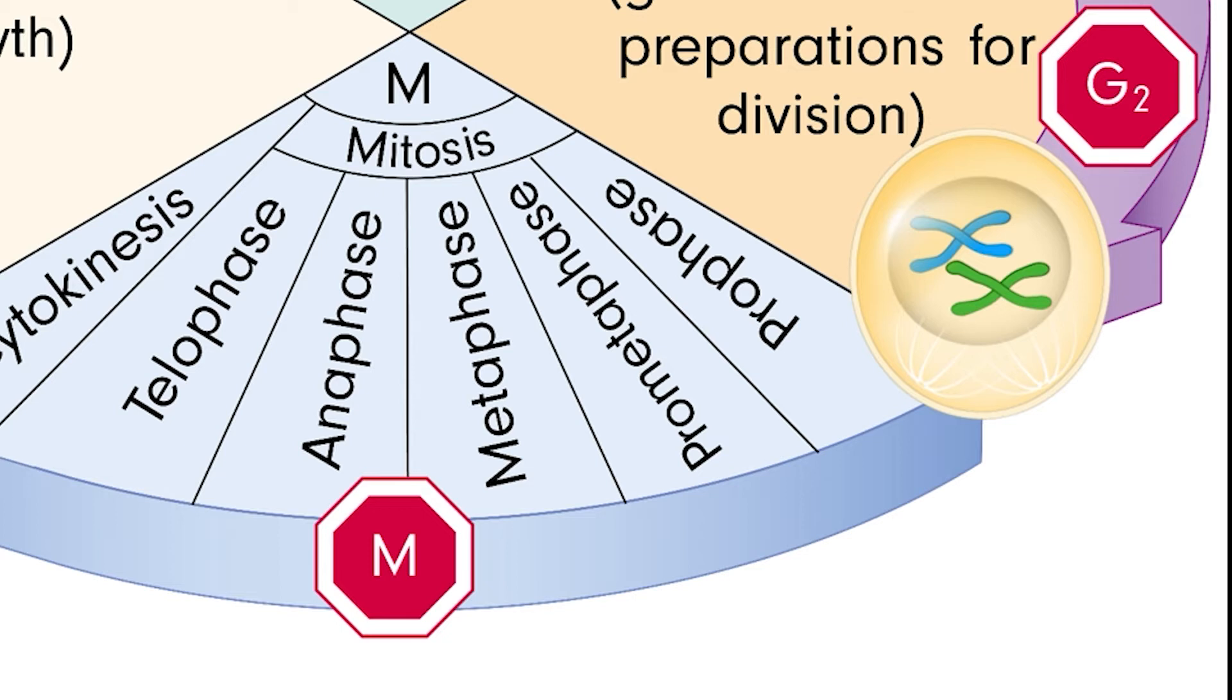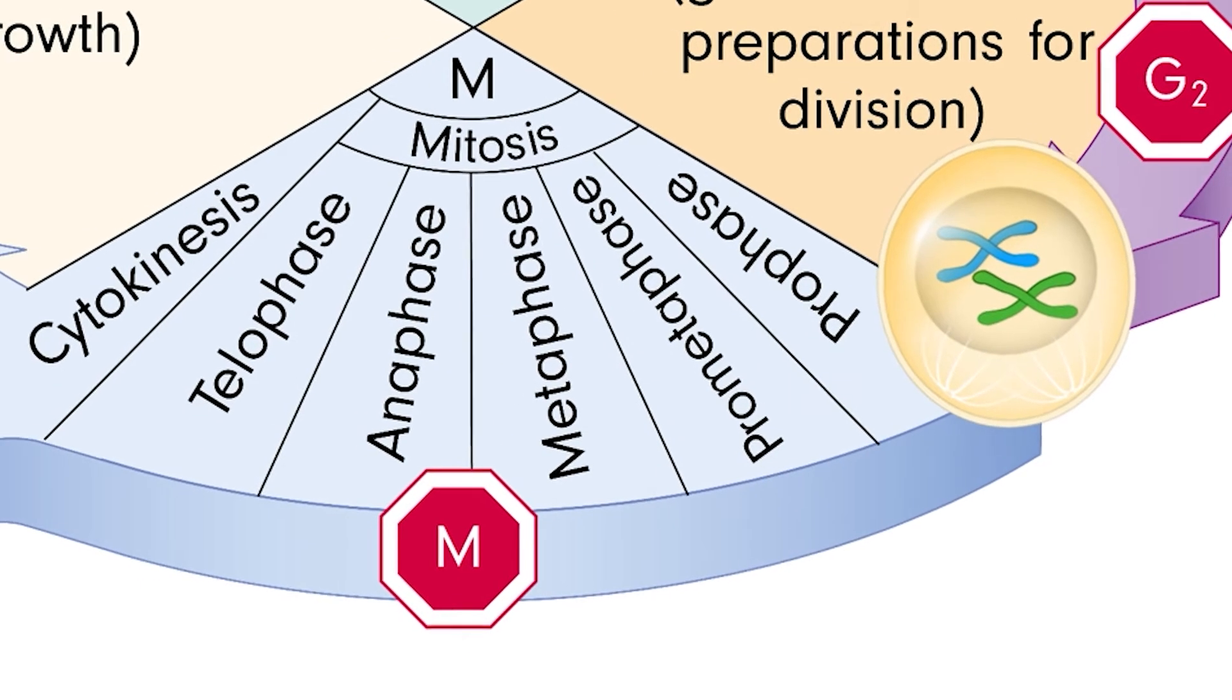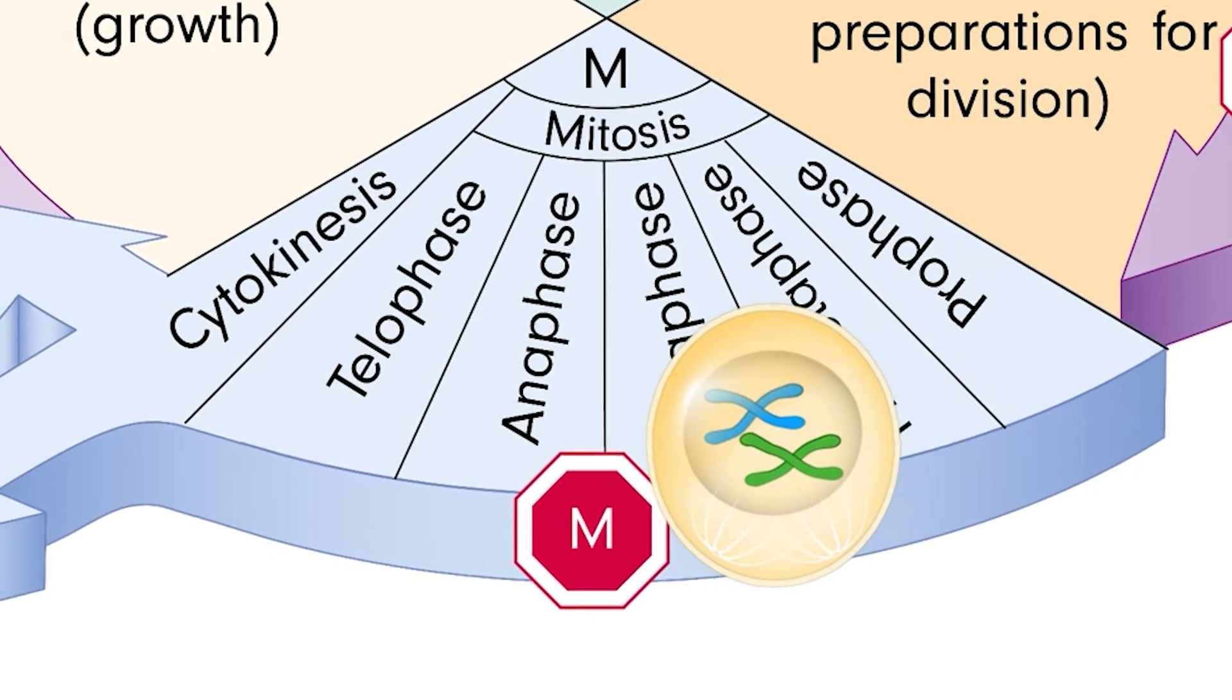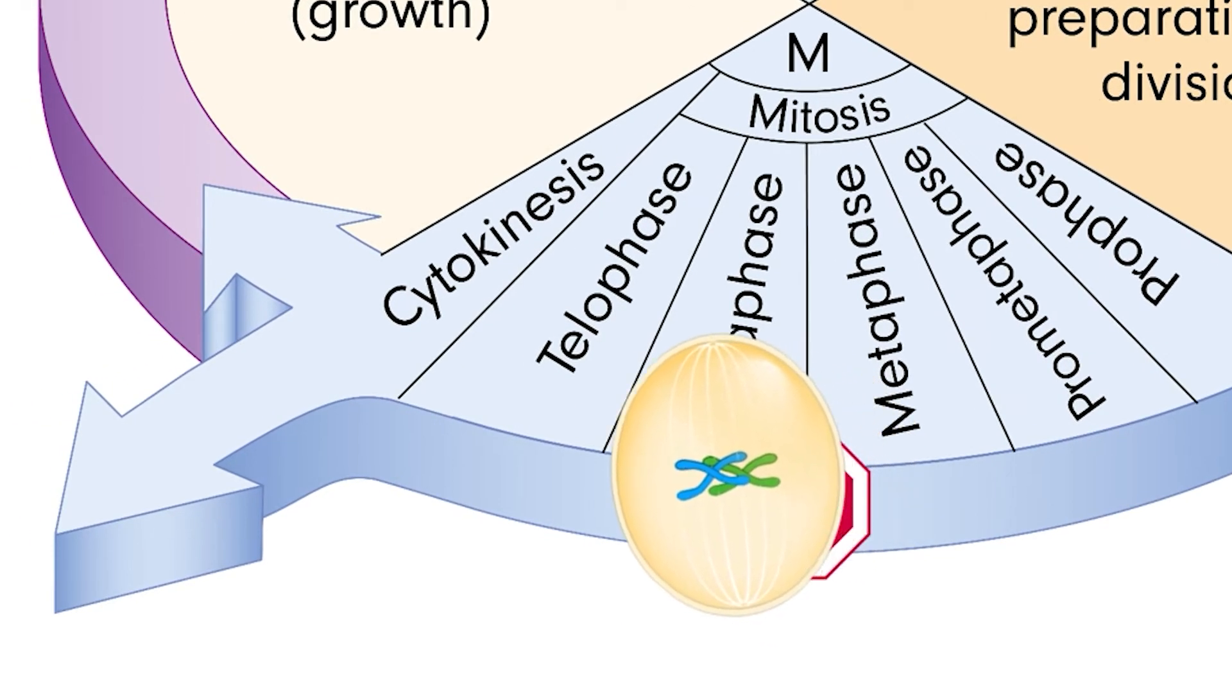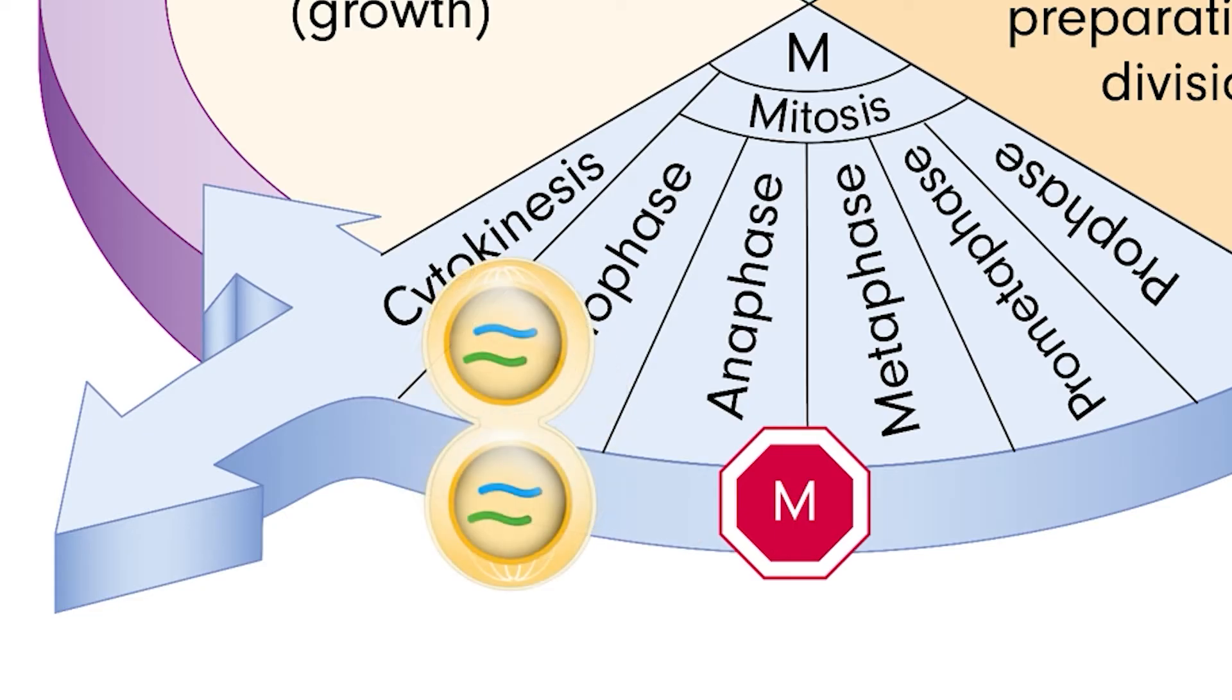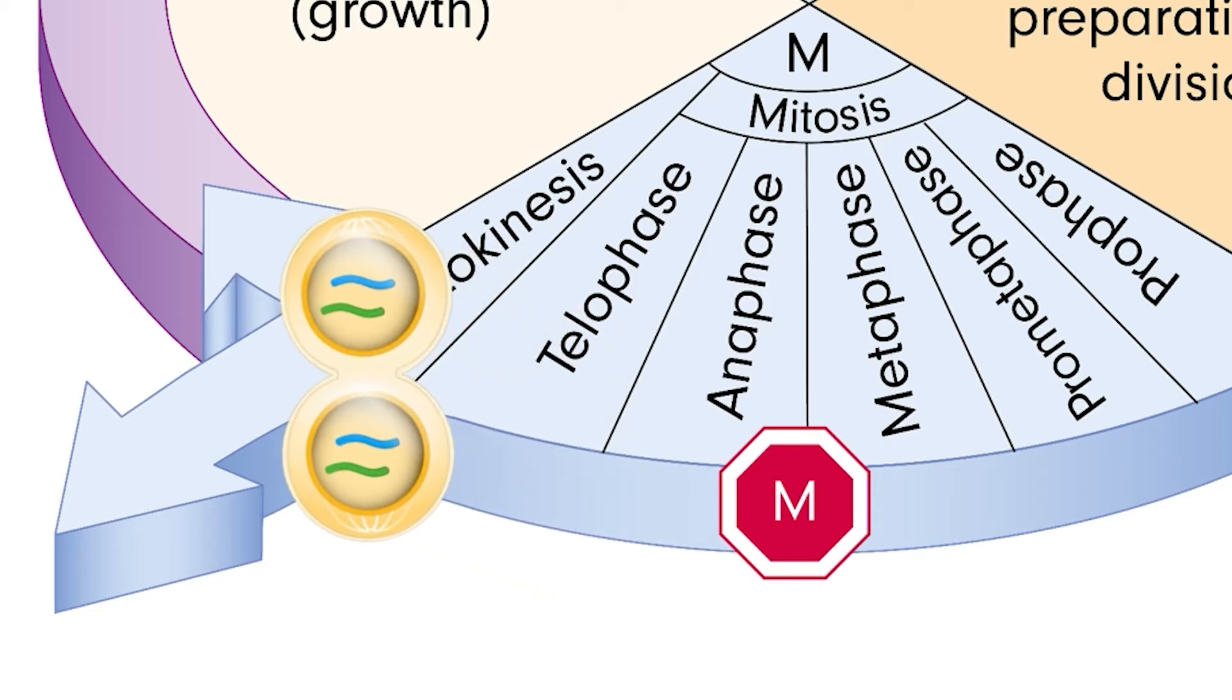After all of this, the cell suspends important metabolic processes and enters the complex process of mitosis. We will go over the specifics of mitosis in a few slides. For now, all you need to know is that the cell separates DNA molecules into two new daughter cells, and the process starts over.